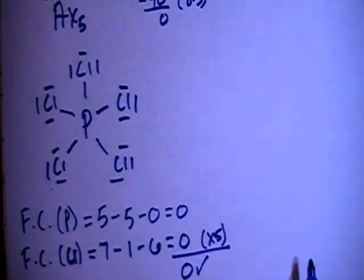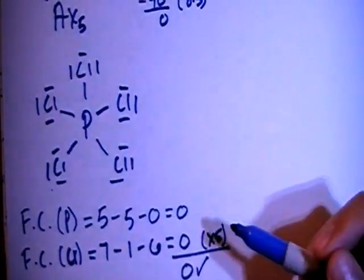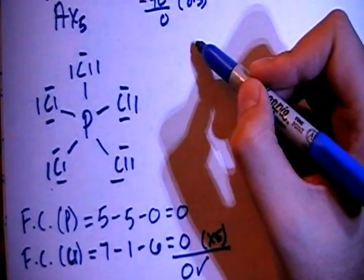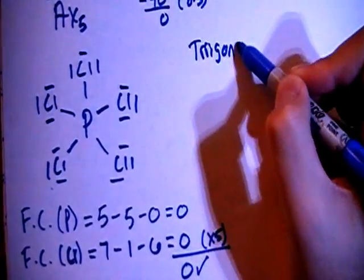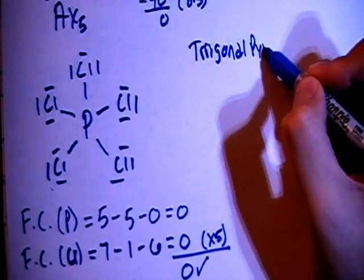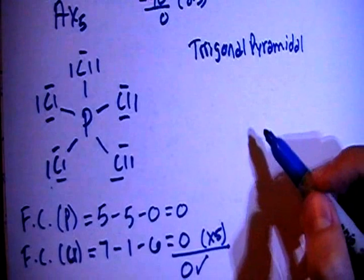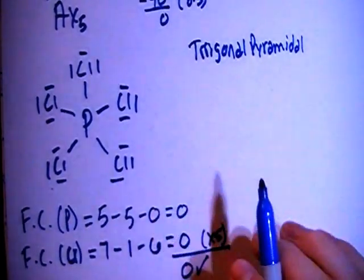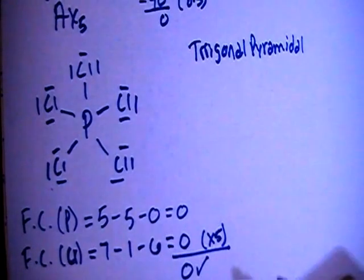Now we can talk about the shape. AX5, there's 5 surrounding atoms around the central atom, which means that this is going to be a trigonal pyramidal shape. It means that you have a flat triangle shape with one atom above it and one atom below it.